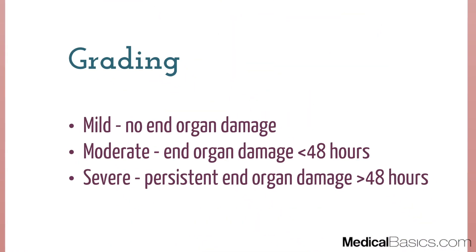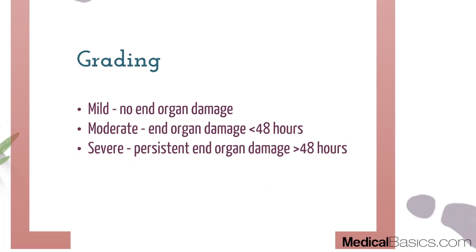The next topic is grading. Acute pancreatitis falls into three broad categories: mild, moderate, and severe. The dividing line between mild and moderate or severe is evidence of end-organ damage. Mild has no evidence of end-organ damage. Moderate has end-organ damage lasting less than 48 hours. Severe has persistent end-organ damage greater than 48 hours, assessed through clinical findings and labs such as lactate.